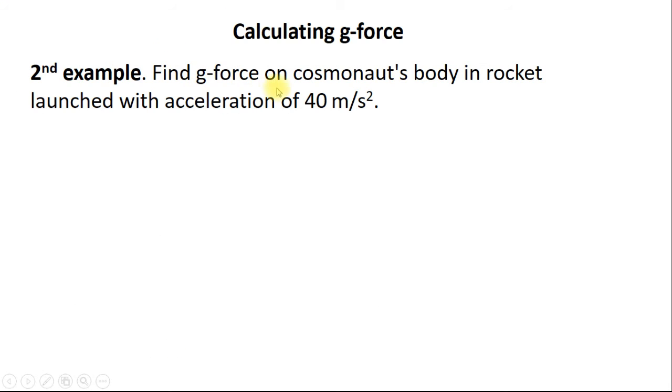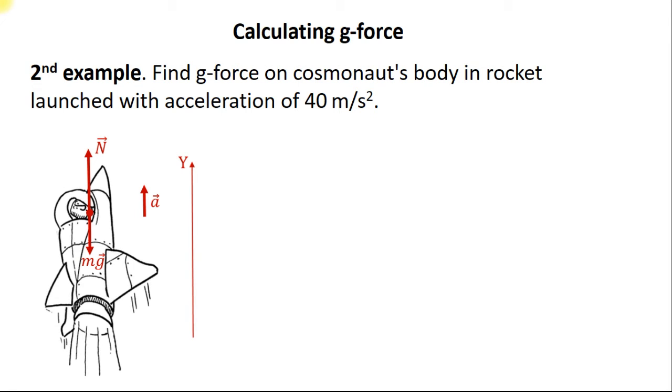The second example: Find g-force on a cosmonaut's body in a rocket launched with acceleration of 40 meters per second squared. Let's draw all the forces acting on the cosmonaut's body inside of the rocket. According to Newton's second law, we can write the following equation. Then the normal force is equal to m multiplied by a plus g.